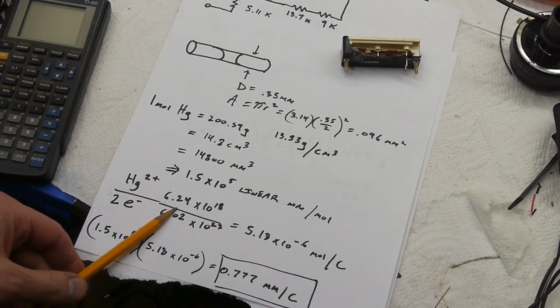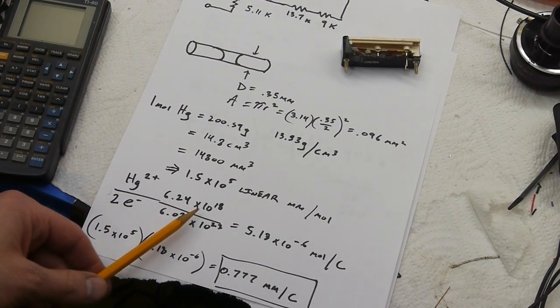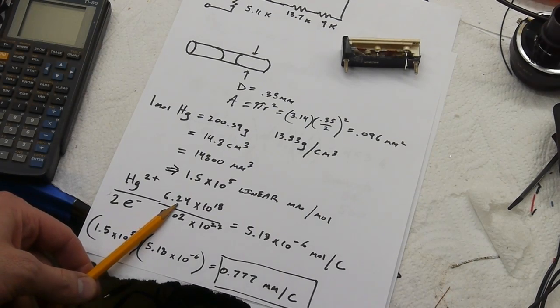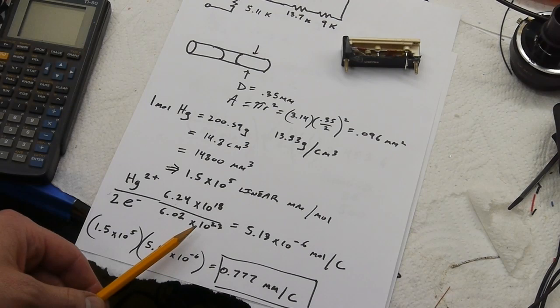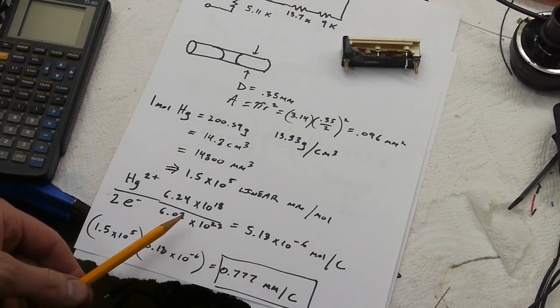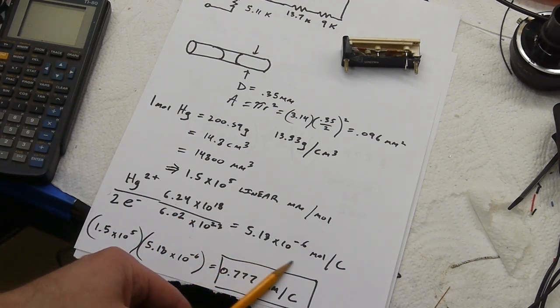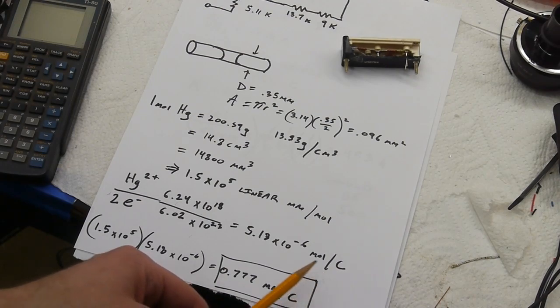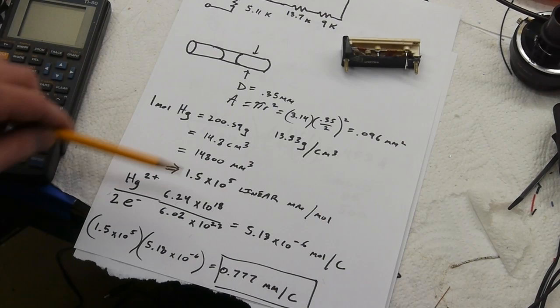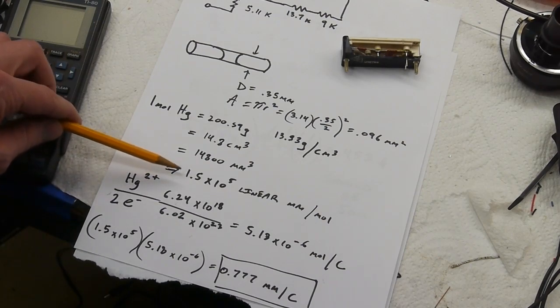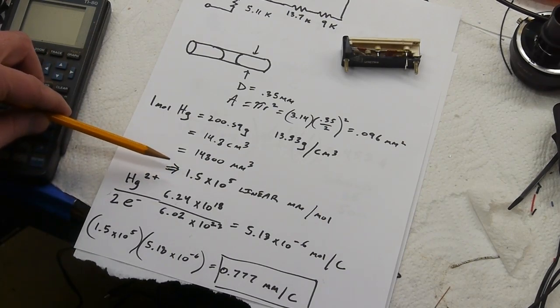And then we have 6.2 times 10 to the 18 electrons per coulomb, and 6.02 times 10 to the 23 items per mole, so then we end up with this amount of moles per coulomb, so we've basically figured out how much electricity it's going to take to move a mole of stuff, and we also know how much linear space a mole is going to take up in that capillary.